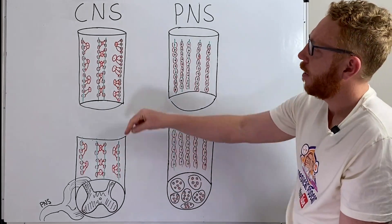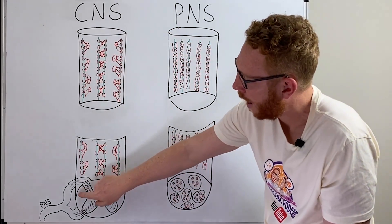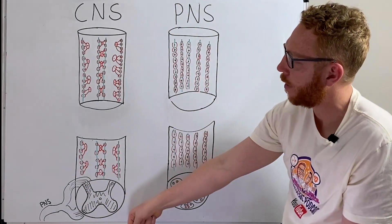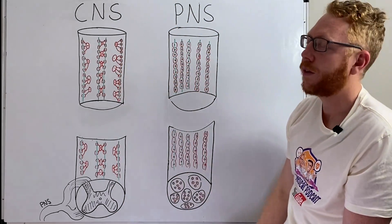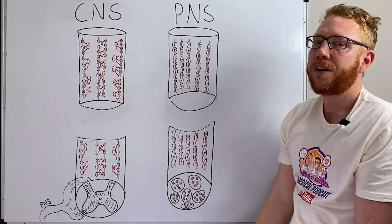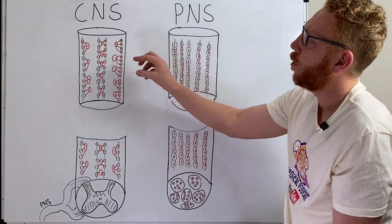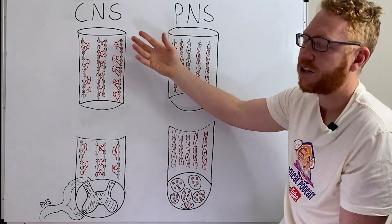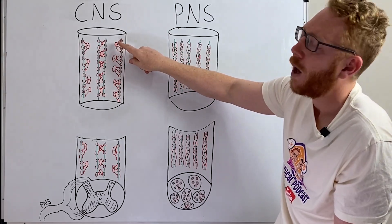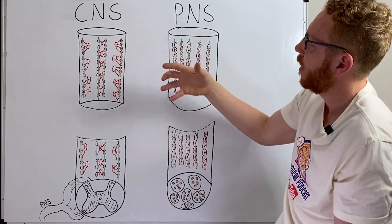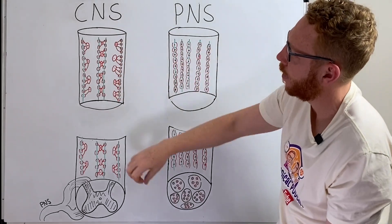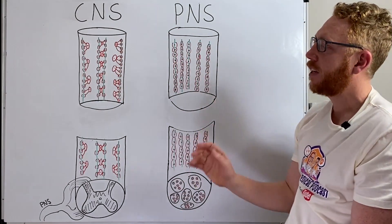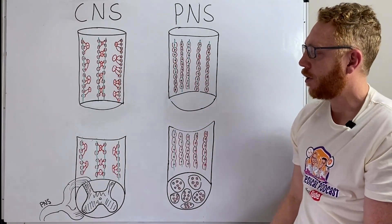Another big difference is where we do have white matter which are the tracks going either down or up they are myelinated not by Schwann cells but what we call oligodendrocytes. Myelination is the same thing but the way it myelinates is a bit different. Instead of hugging it it kind of puts arms and legs out to wrap around it and that's going to result in a bit of a different outcome when we do have injury.